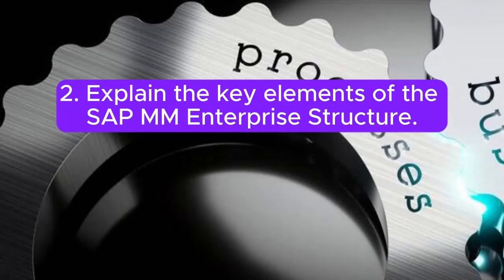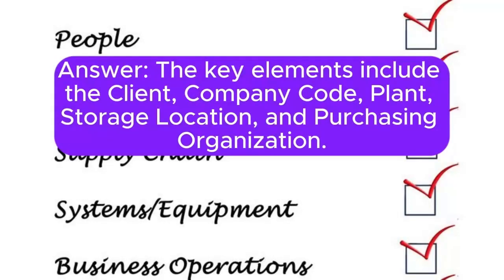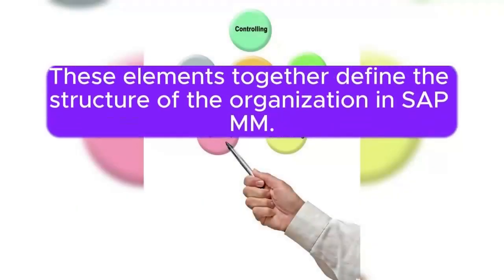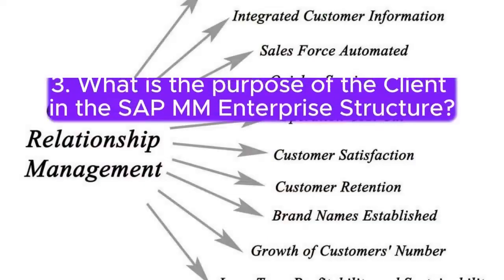Question 2: Explain the key elements of the SAP MM Enterprise Structure. The key elements include the client, company code, plant, storage location, and purchasing organization. These elements together define the structure of the organization in SAP MM.